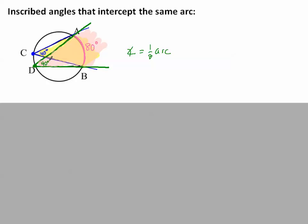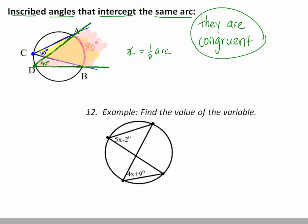The point is, if inscribed angles intercept the same arc, then they are congruent. They're the same. So let's just apply that to one little example, and we'll move on.